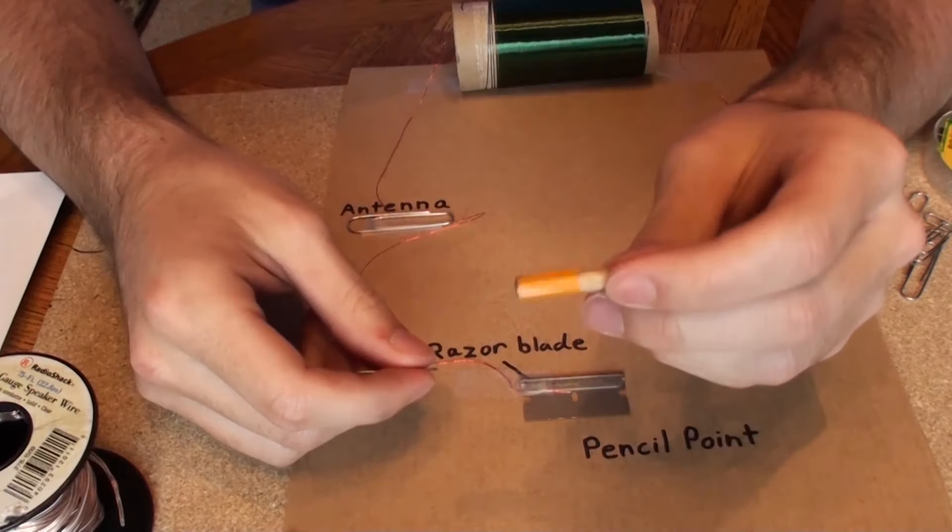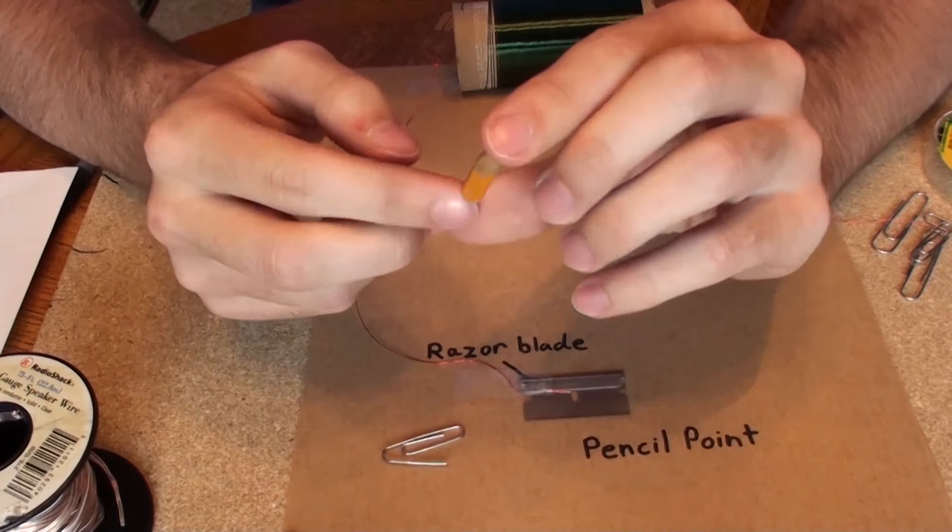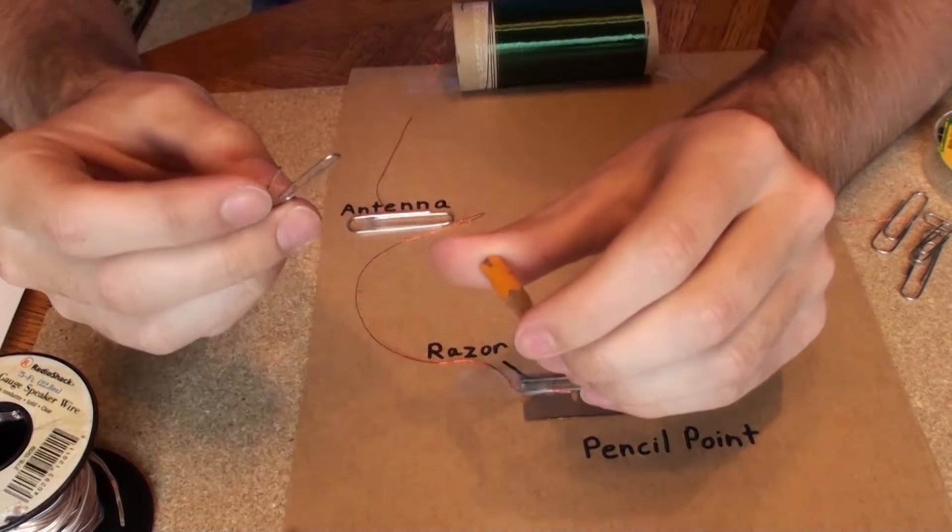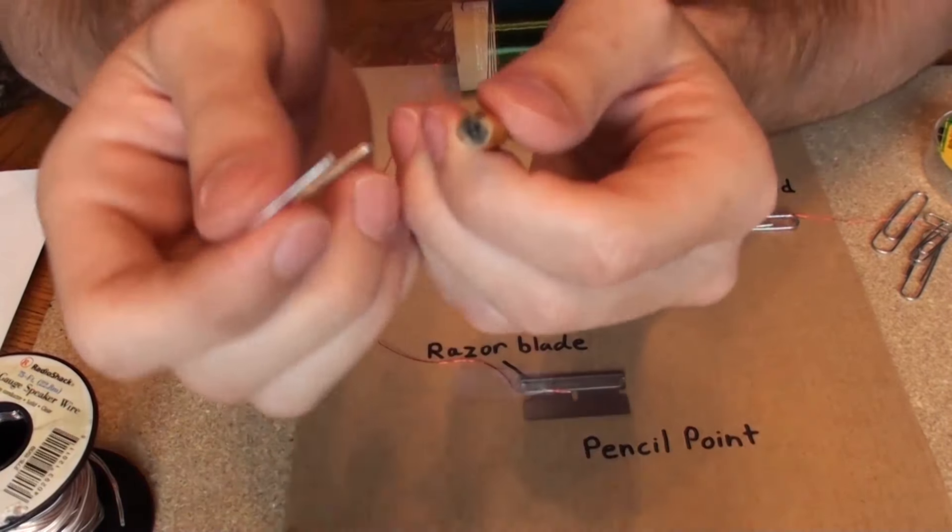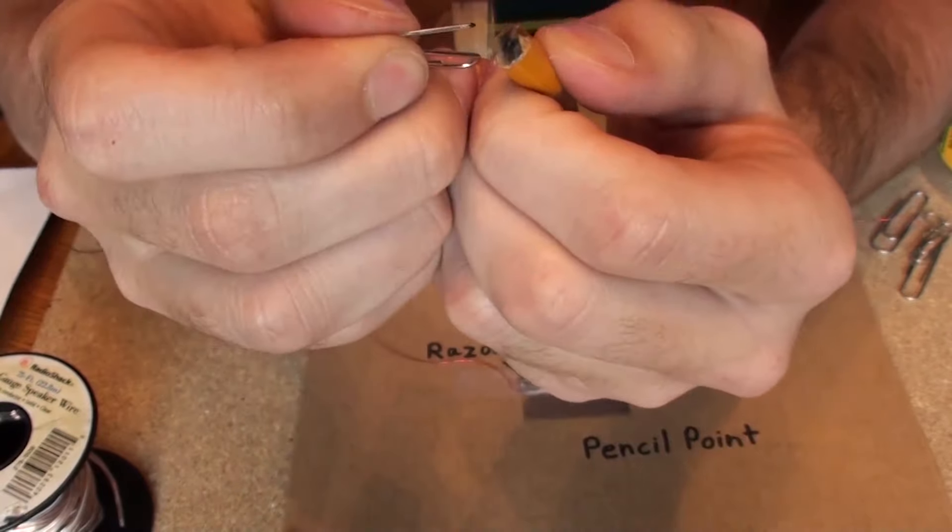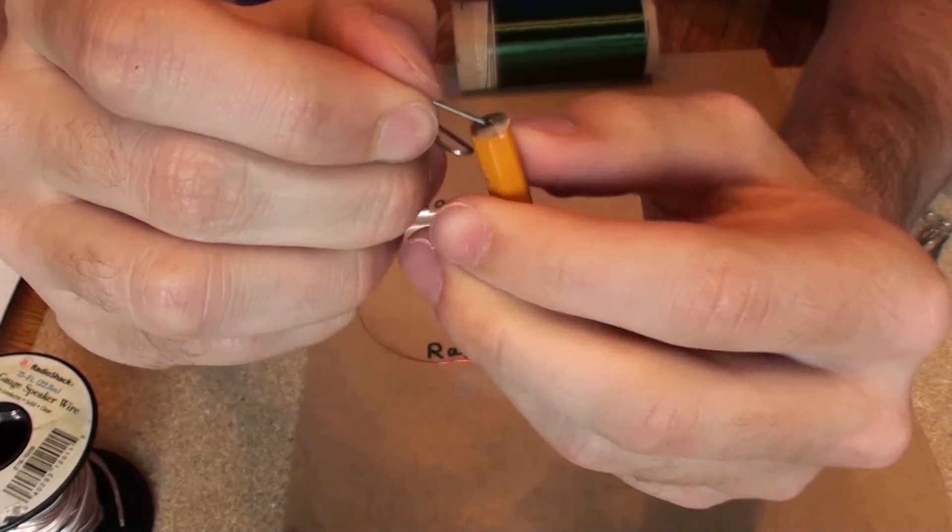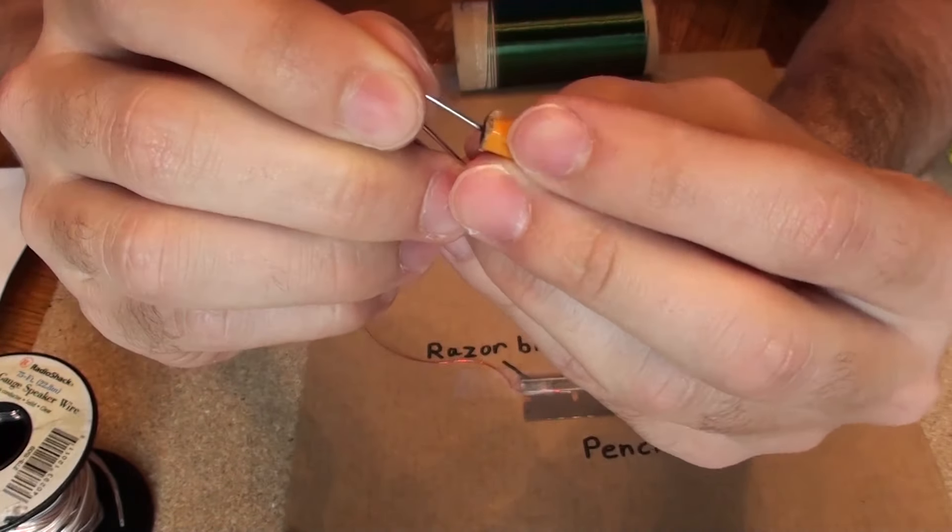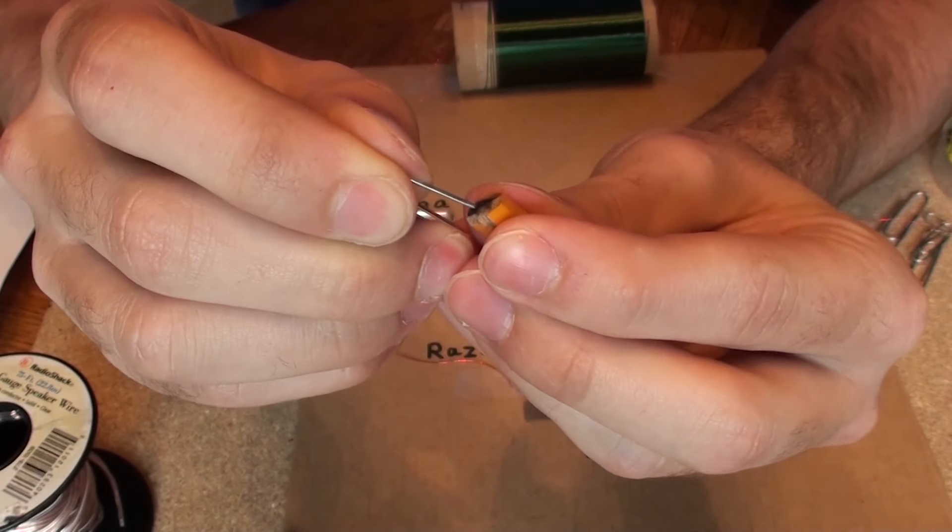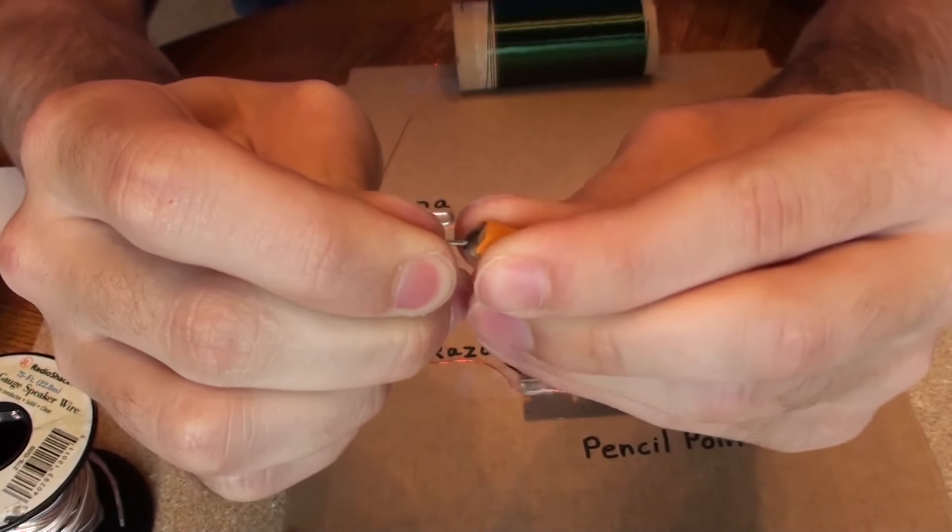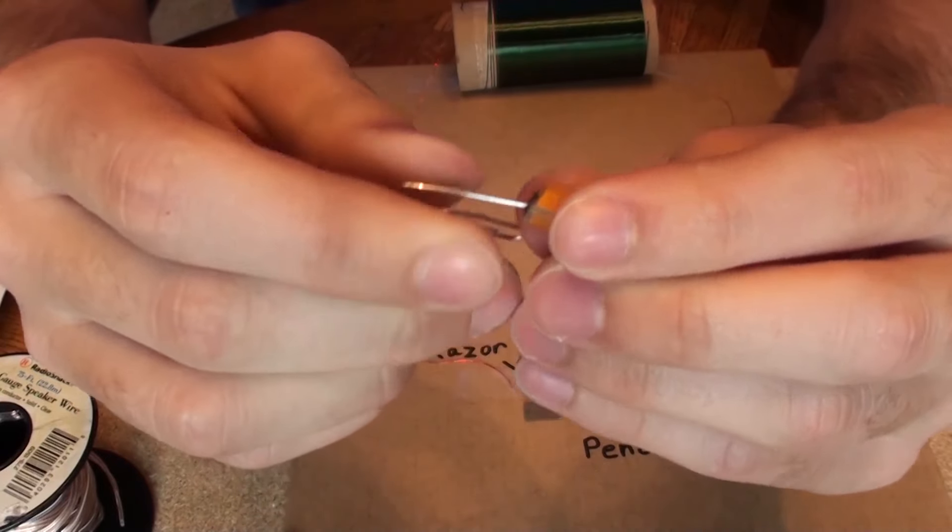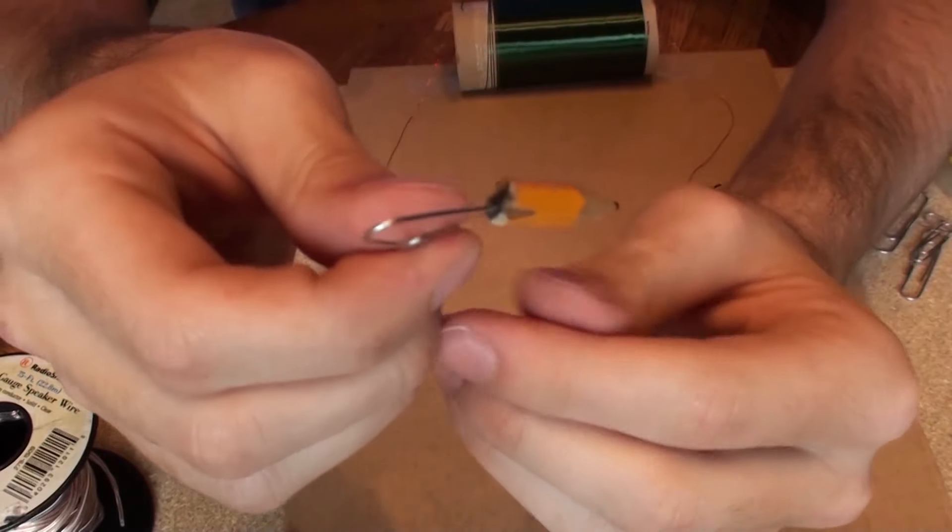Next, you're going to want to take your little broken pencil head and either a bobby pin or paper clip and what you want to do is shove it into the lead of the pencil. Not into the wood, right into the lead. So it should look a little something like that.